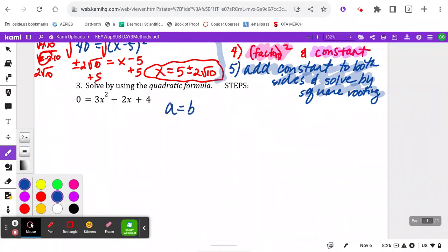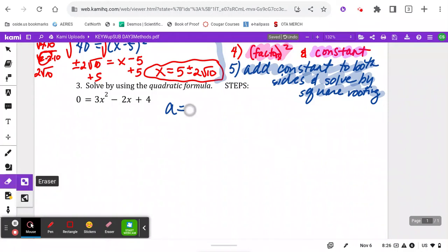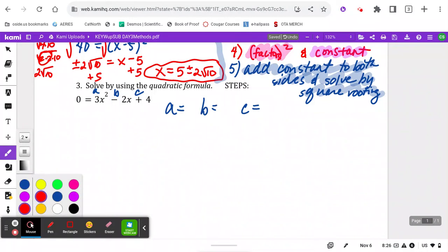Okay, last but not least, I have been having you get me a b and c as practice for this formula. So a equals, b equals, c equals. Go ahead and try that. All right, did you get that a equaled 3, b equals negative 2, and c equals 4?